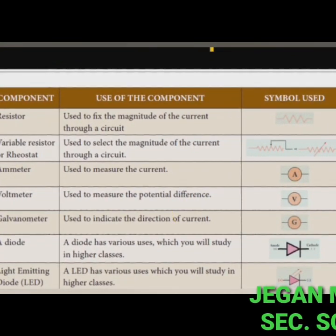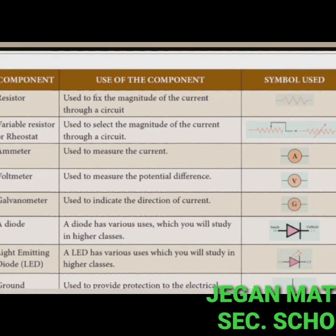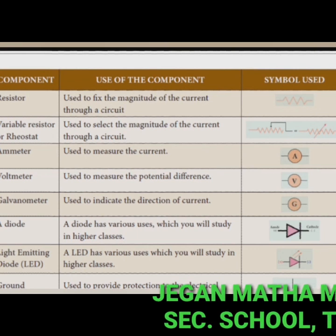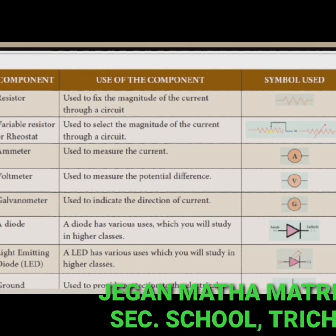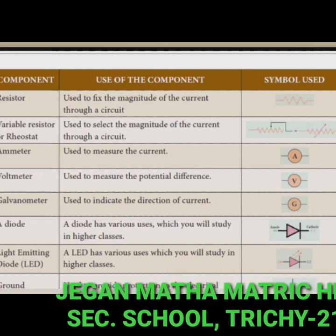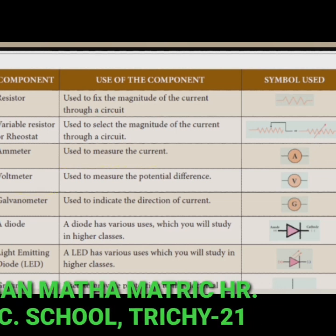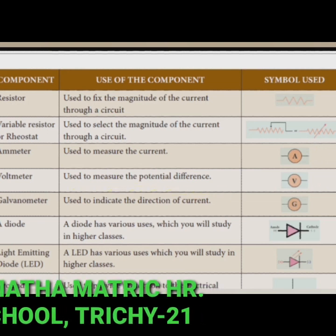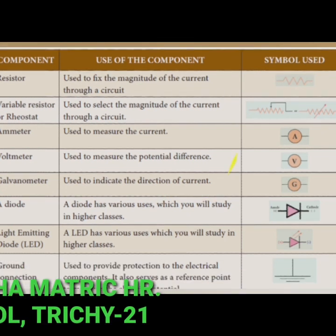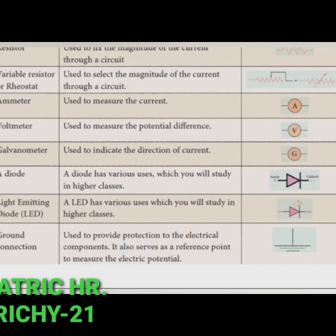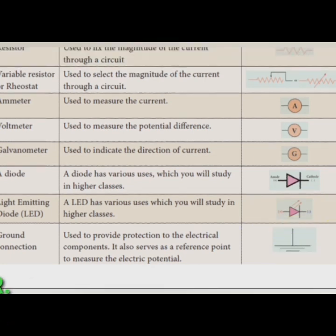First, the resistor — its symbol is a rectangle and it is used to fix the magnitude of the current through a circuit. The variable resistor is used to select the magnitude of the current. Then, the ammeter — its symbol is A in a circle and it is used to measure the current. The voltmeter symbol is V and it is used to measure the potential difference. A galvanometer is used to indicate the direction of current. A diode and a light emitting diode (LED) are also shown — their uses will be studied in higher classes. The ground connection is used to provide protection to electrical components and serves as a reference point to measure electric potential.